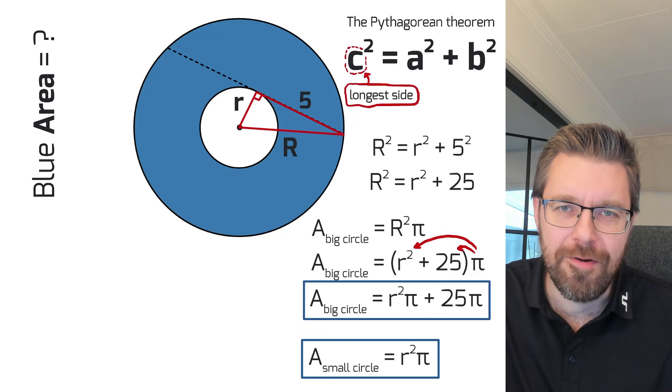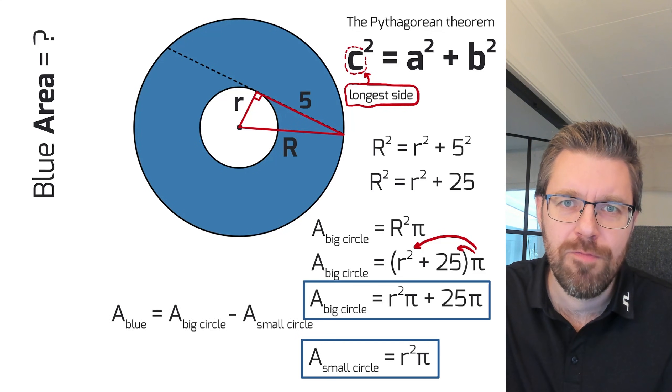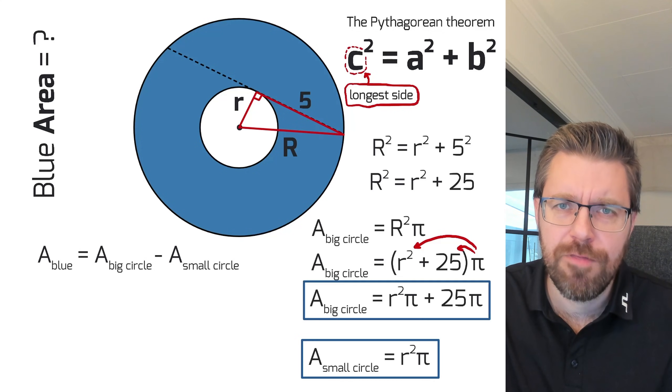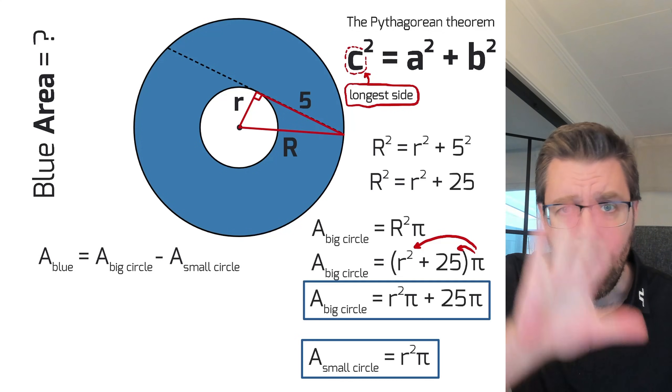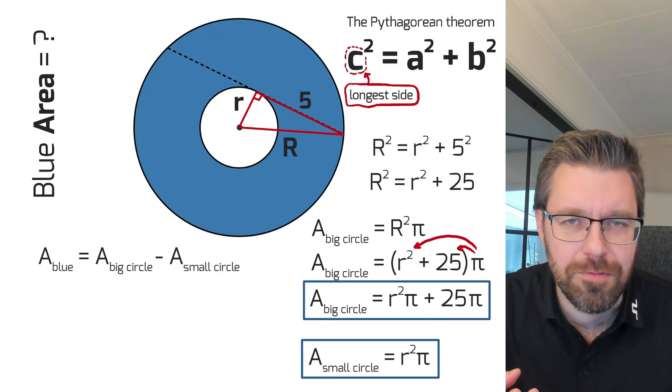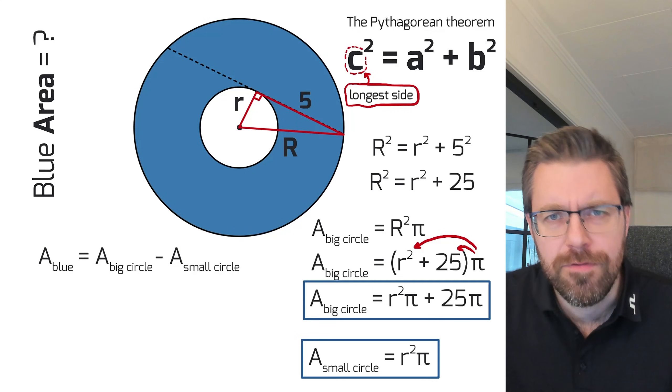And now we know the area of the blue circle can of course be written as area of big circle minus area of small circle. Because if you paint the whole thing and then erase the thing in the middle, then you get the blue. And the erasing is kind of like taking minus.